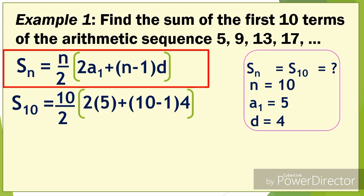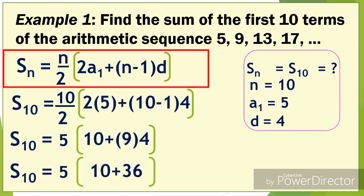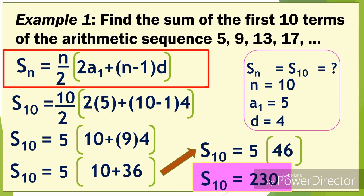Now let's substitute. S of 10 equals 10 over 2 times 2 times 5 plus 10 minus 1 times 4. Simplifying: 10 divided by 2 is 5; 2 times 5 is 10; 10 minus 1 is 9; 9 times 4 is 36. So S of 10 equals 5 times 10 plus 36, which is 5 times 46. Therefore, S of 10 equals 230. The sum of the first 10 terms of the sequence is 230.